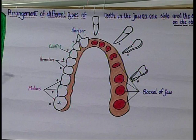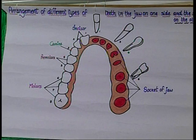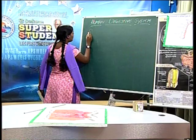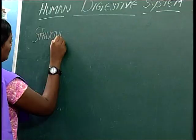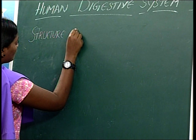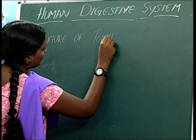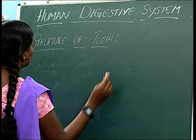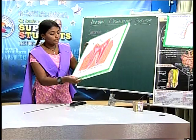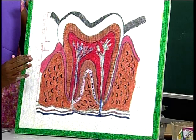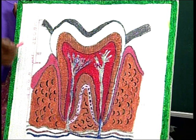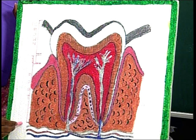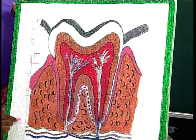Let me know in detail about the structure of a tooth. The tooth is divided into three parts: crown, neck and root. The crown is the exposed part, the neck is the middle part, and the roots are embedded in the sockets of the jaw.